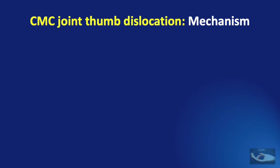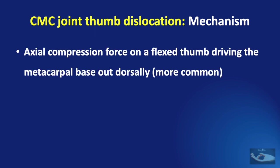The mechanism by which the carpometacarpal joint of the thumb dislocates is when axial compression force is applied on a flexed thumb, driving the metacarpal base out dorsally. This is the more common method by which dislocation occurs.